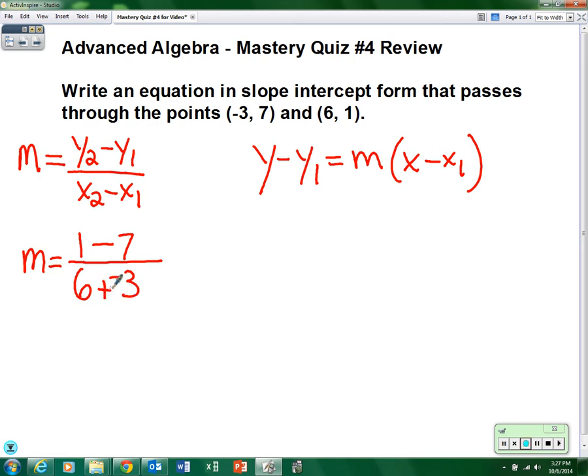So that becomes negative 6 over 9. Always reduce. Negative 6 over 9 becomes negative 2/3. Alright, now let's plug the numbers into our point-slope formula.